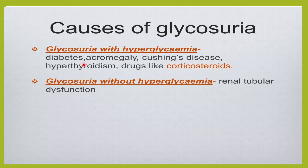Glycosuria with hyperglycemia is seen in diabetes, acromegaly, Cushing's syndrome, patients on corticosteroids, and hyperthyroidism. Glycosuria without hyperglycemia occurs in renal tubular dysfunction where blood sugar is normal but glucose appears in the urine. These are the various causes of glycosuria, and glucose in the urine can be detected either by reagent strips or by the Benedict's solution method. Thank you for watching — please like, share, and subscribe.